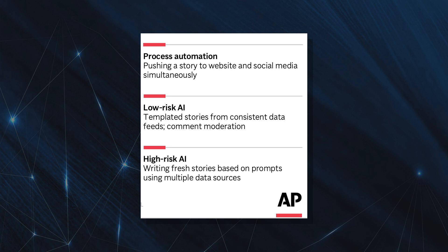Then there's high risk AI, like writing a prompt and creating a new story, a summary of the story, or headlines. We group these into three categories because these are things to consider when implementing tools into your newsroom. Do you need a simple trigger in place, like email sorting? Or do you have a reliable source of data and a lot of information coming in that could render a news brief through natural language generation? The last category, high risk AI, points to generative AI.